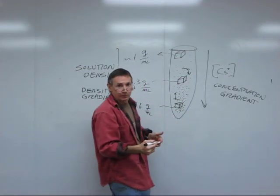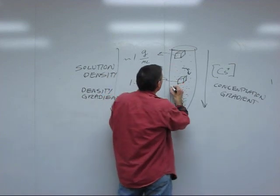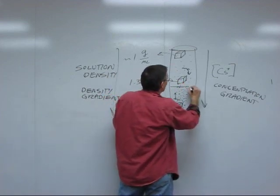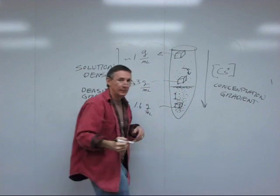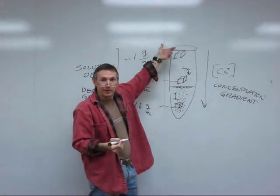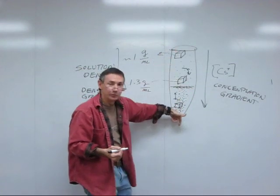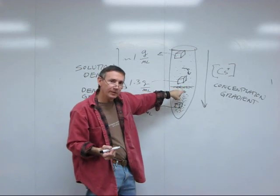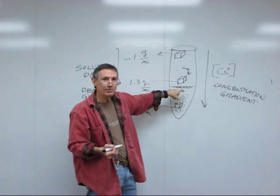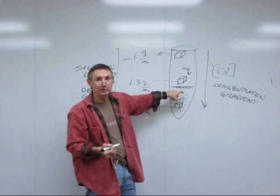All the DNA molecules in that solution are going to migrate until they get all of them to one level in the tube, where the solution above them is less dense than they are, the solution below them is more dense than they are, and the solution right at that point has the same density as the density of the DNA.